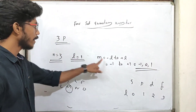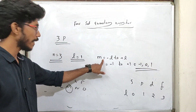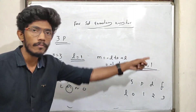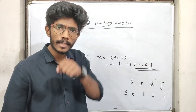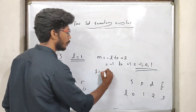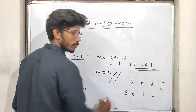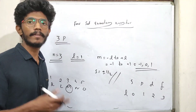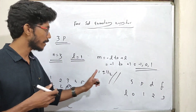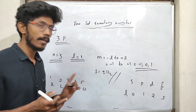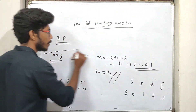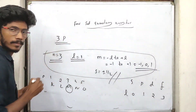M takes values from minus 1 to plus 1 — that is, minus 1, 0, 1. For the spin quantum number S, the value is plus or minus half. It depends on the spin orientation of the electrons. So S is plus half or minus half.